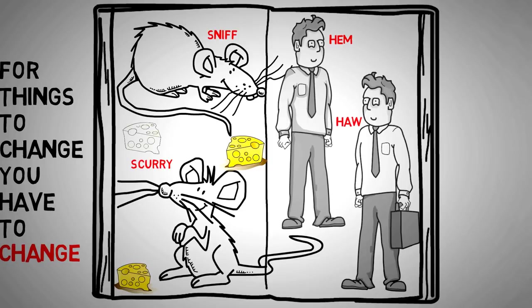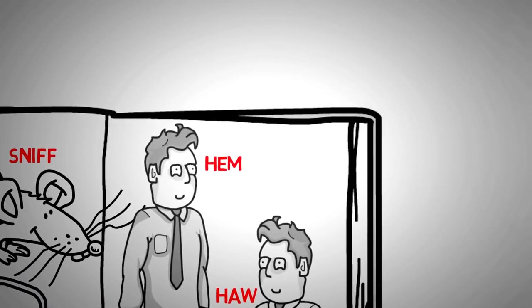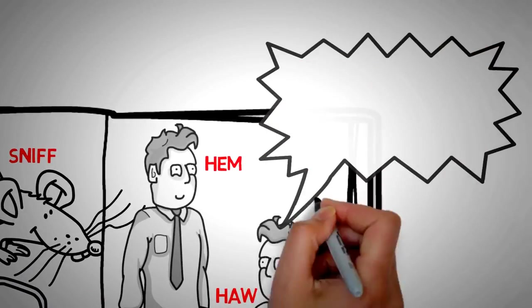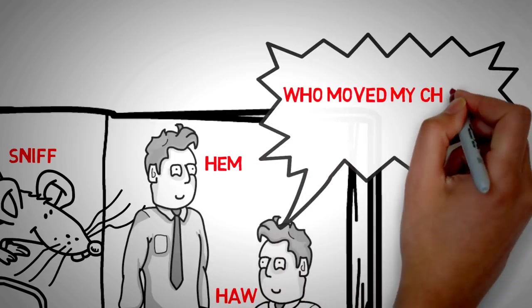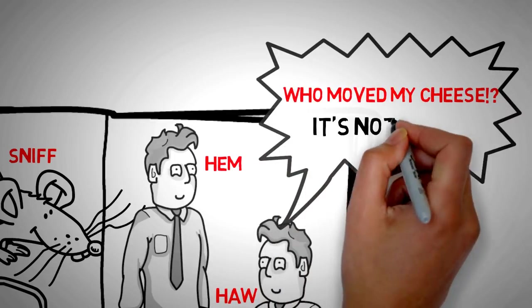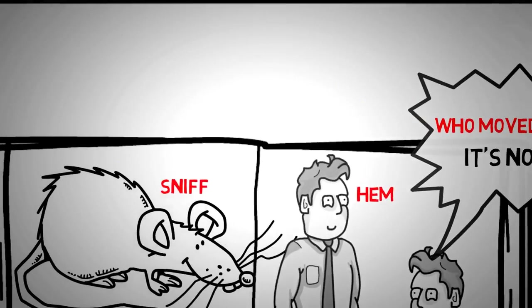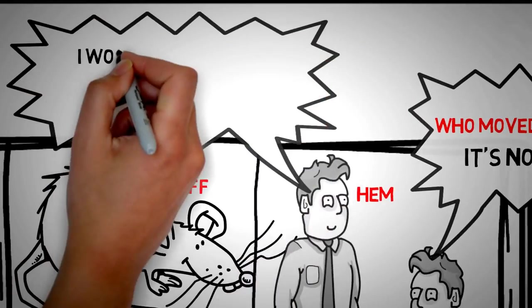Hem and Haw had not been paying attention to the changes. They took it for granted and were unprepared. How could this have happened, they thought. Nobody warned them. They wanted to believe somebody moved their cheese and didn't want to believe that they had failed to notice it getting smaller and smaller every day.